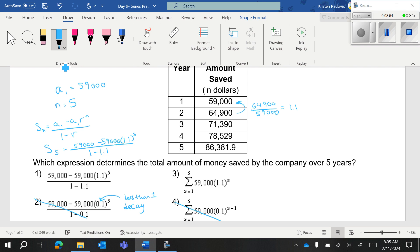In order to do sigma notation, you need your explicit formula. The explicit formula is A sub N equals A sub 1 R to the N minus 1. So the explicit formula is 59,000 times 1.1 to the N minus 1. You're going to take this piece and you're going to put a sigma in front of it from N equals 1 to 5. So you can see that choice 3 is wrong because it's missing the N minus 1. So choice 1 is kind of our only option.